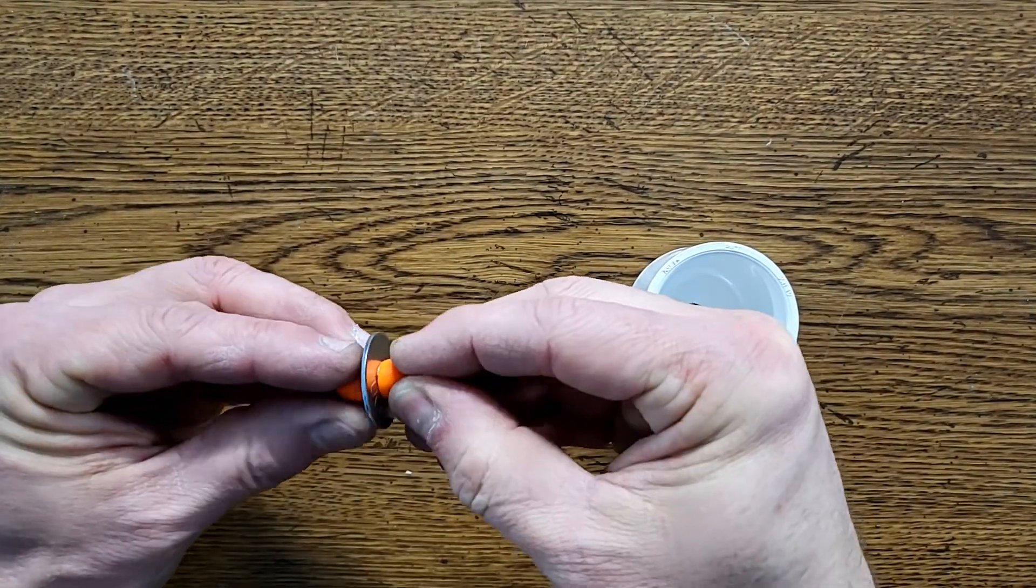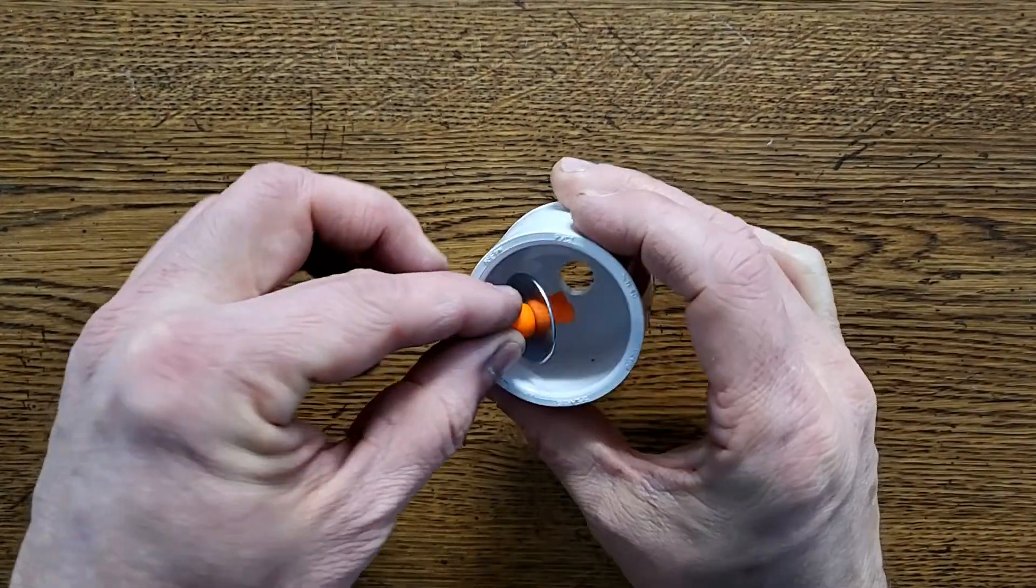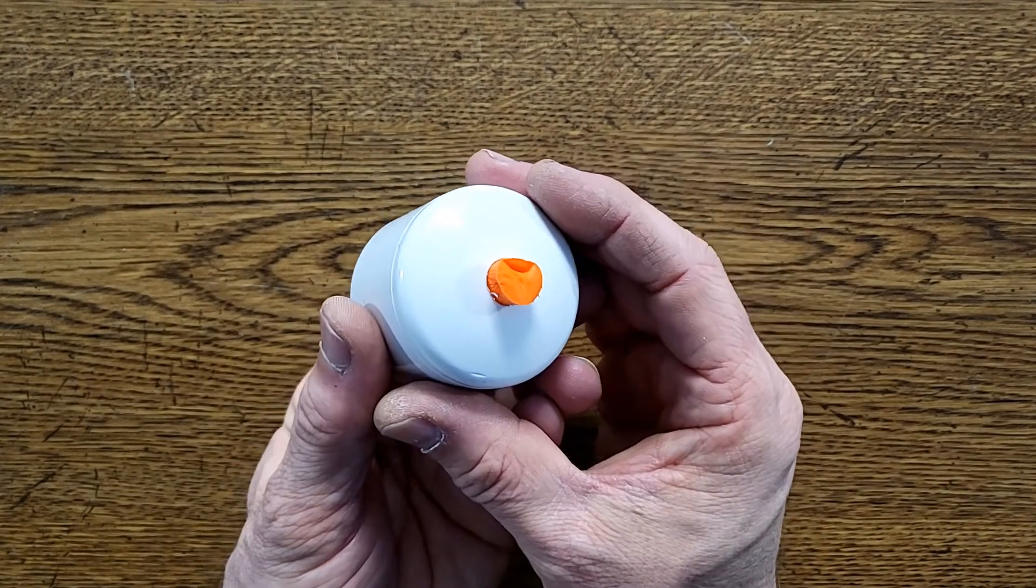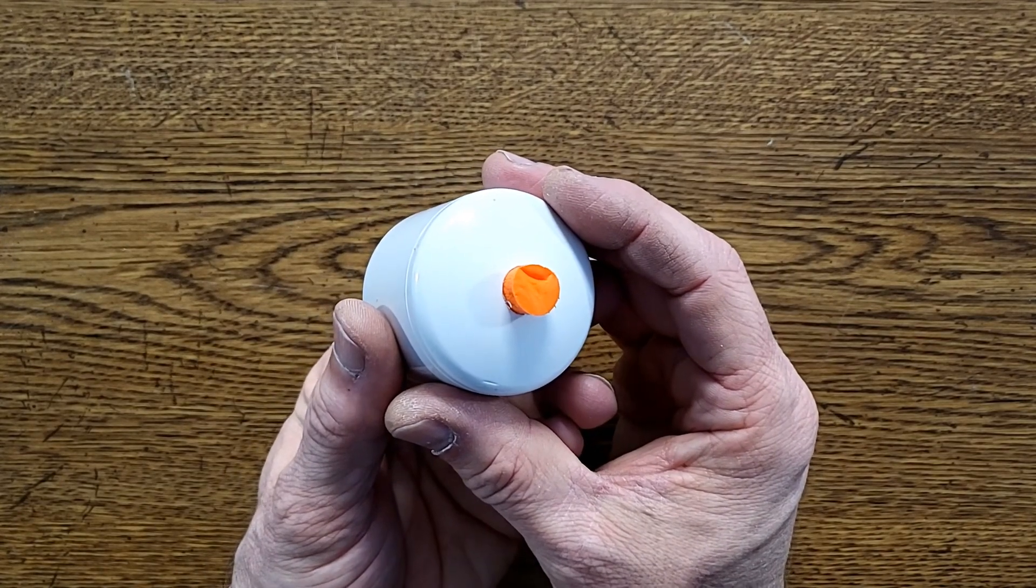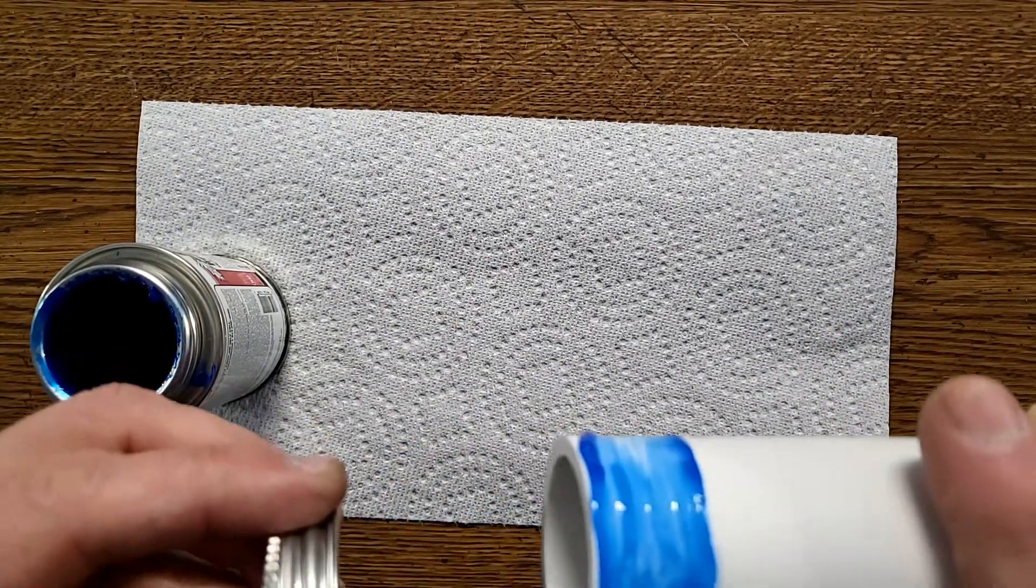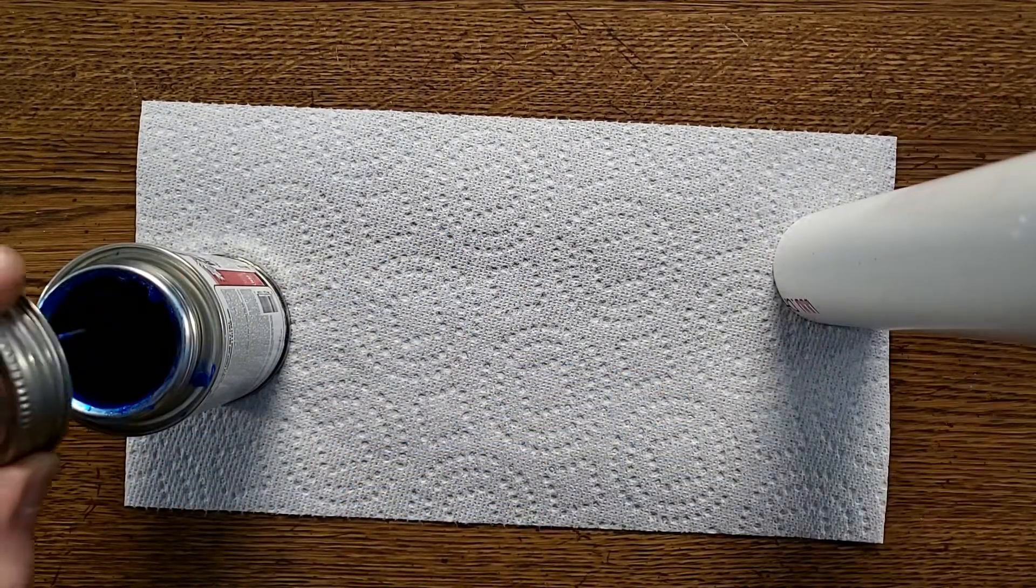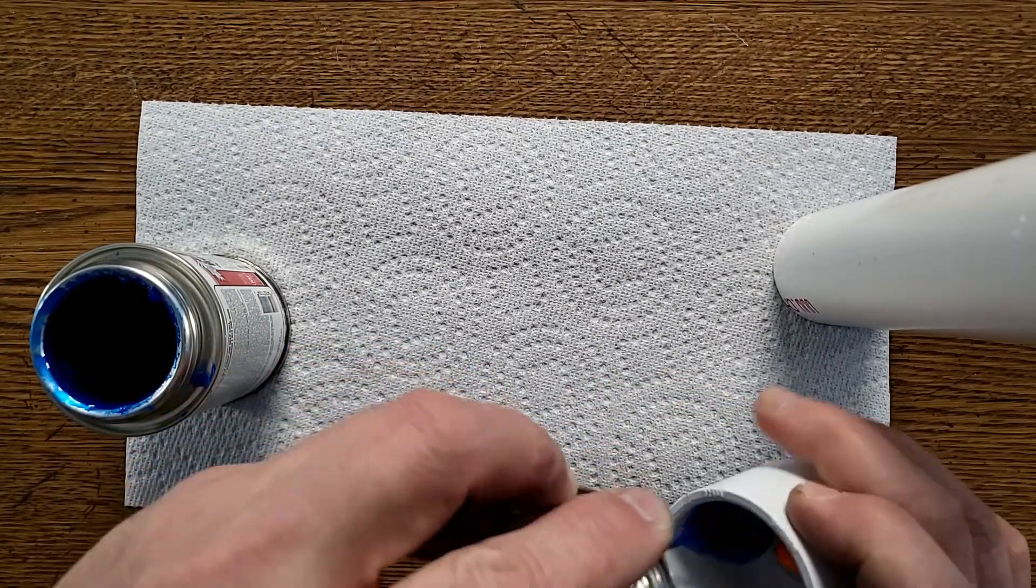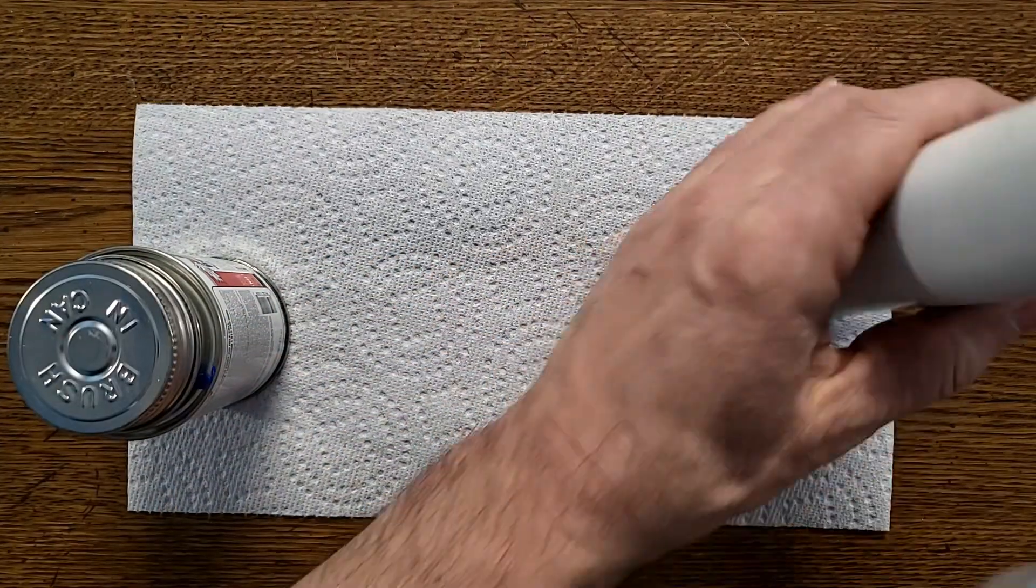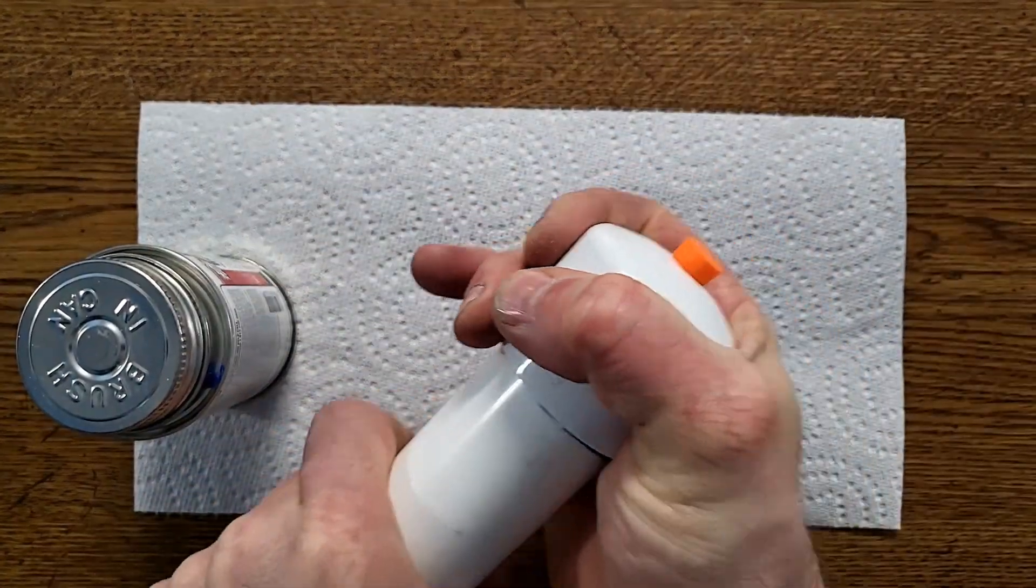Squeeze the larger end of the ear plug and place it into the hole in the PVC cap. Wait a few seconds for the ear plug to expand so it holds itself in place. Use PVC cement to glue this cap onto the PVC pipe. Be sure to use PVC primer if your cement requires it. Apply a thin coat of cement into the cap and a thin layer onto the pipe. Twist the cap a bit when attaching it to the pipe.